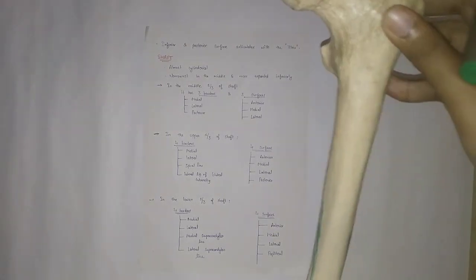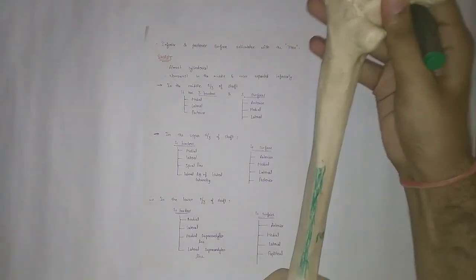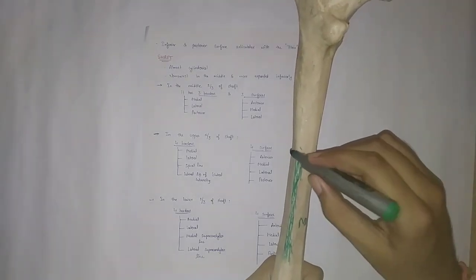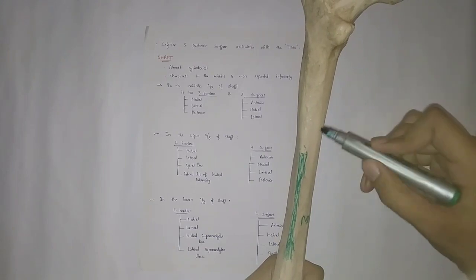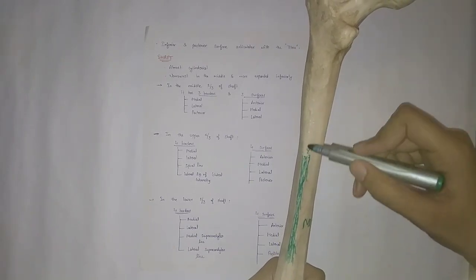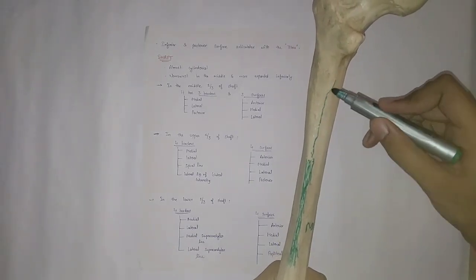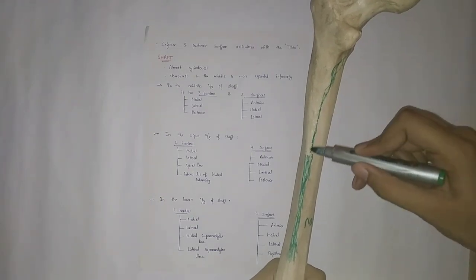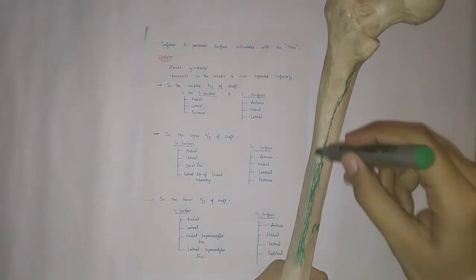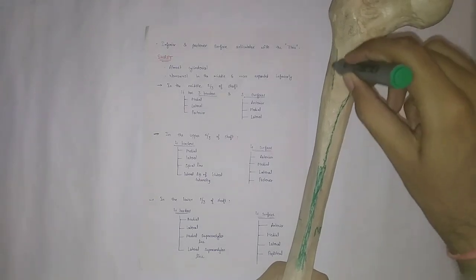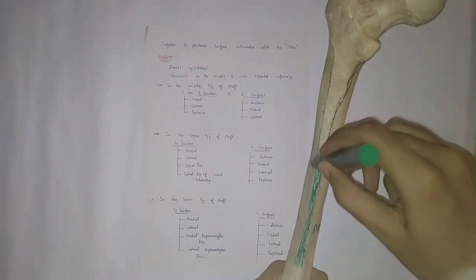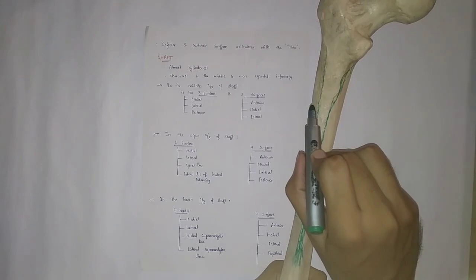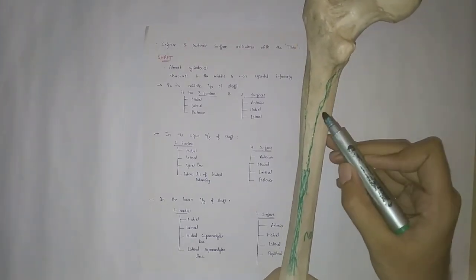Now, in the upper one-third, the linea aspera has a medial lip and a lateral lip. The medial lip merges with the spiral line, and the lateral lip merges with the gluteal tuberosity to form the lateral lip of the gluteal tuberosity. So this is the lateral lip of the gluteal tuberosity, and this one is the spiral line.